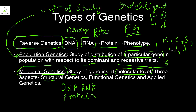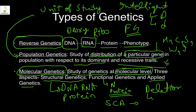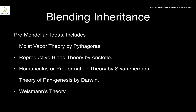Molecular genetics is the study of genetics at the molecular level, dealing with DNA, RNA, protein, translation apparatus, etc. It has three subtypes: structural, functional, and applied. Functional means what protein will be coded by DNA. Applied means understanding how a slight change in a molecule leads to drastic phenotypic changes — for example, a defect in hemoglobin leading to sickle cell anemia.